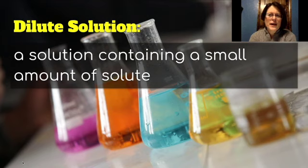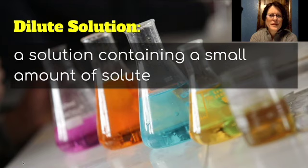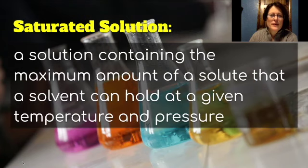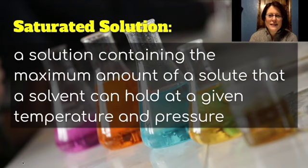Now let's look at how we can classify different solutions. A dilute solution contains a small amount of solute — like really weak lemonade that wouldn't have much taste and you'd want to add more sugar and lemon juice. A concentrated solution contains a large amount of solute — this might be too sweet and too lemony. A saturated solution contains the maximum amount of solute that a solvent can hold at a given temperature and pressure, like when you stir sugar into water and keep adding until no more dissolves.